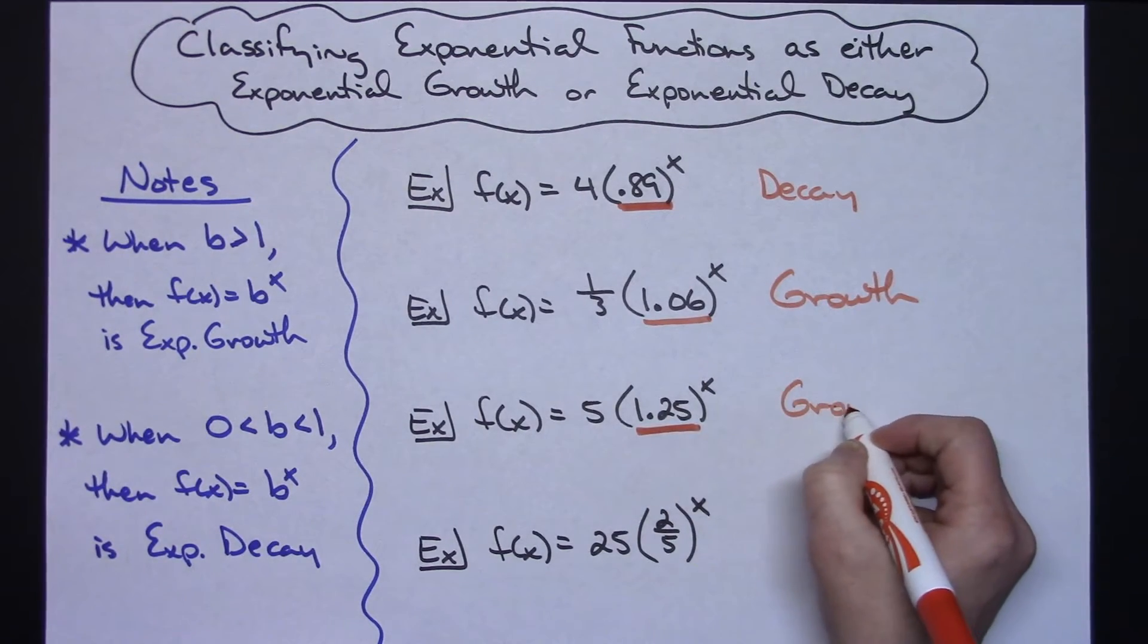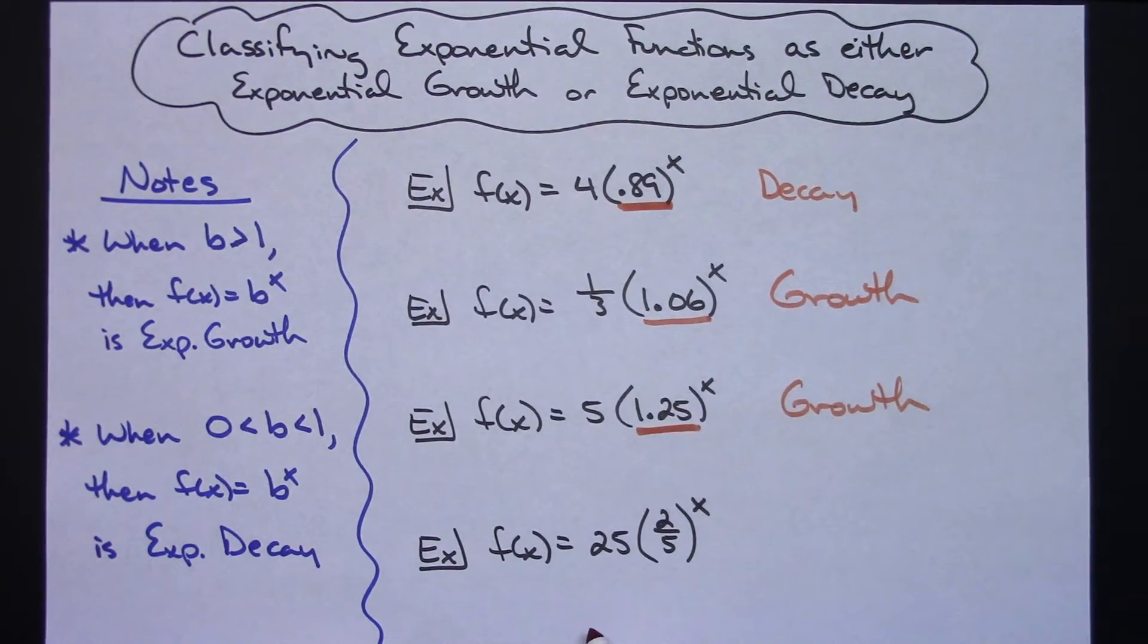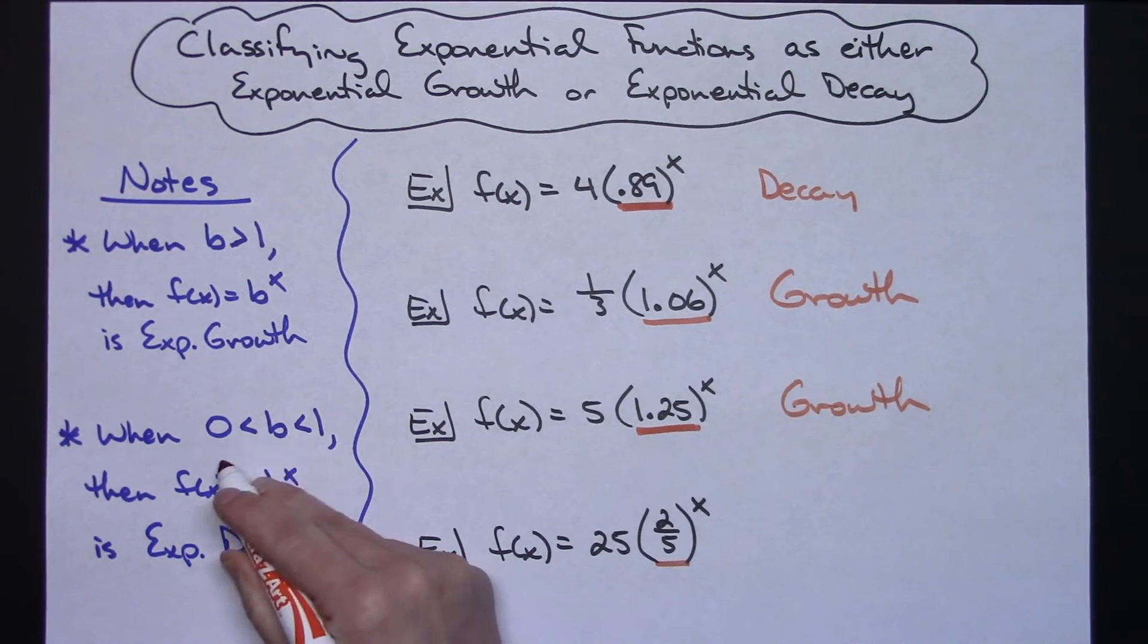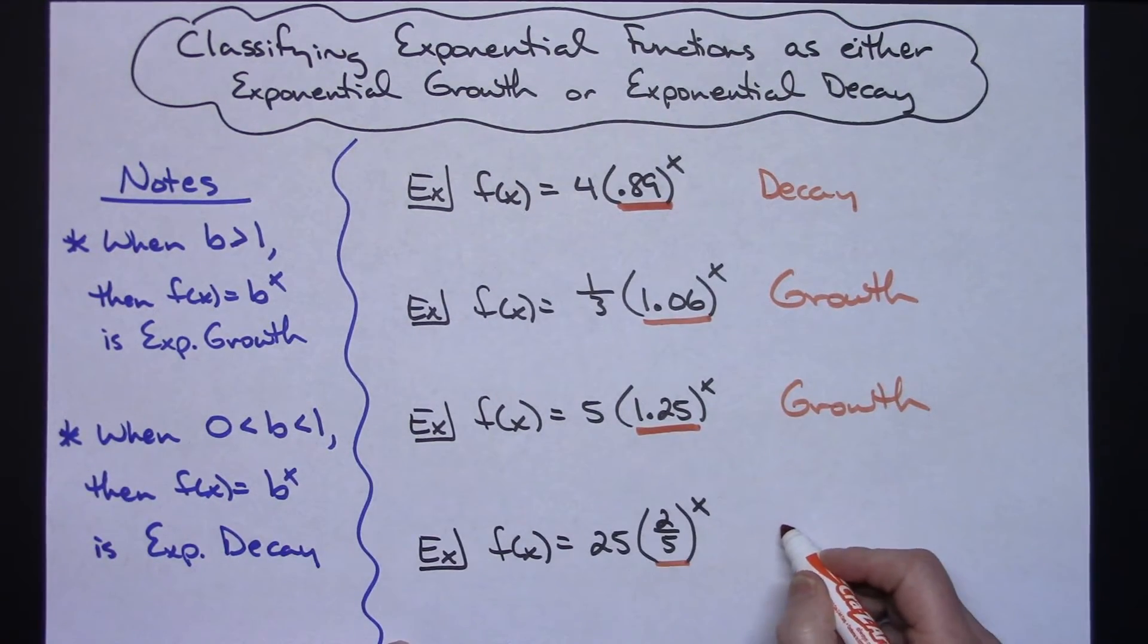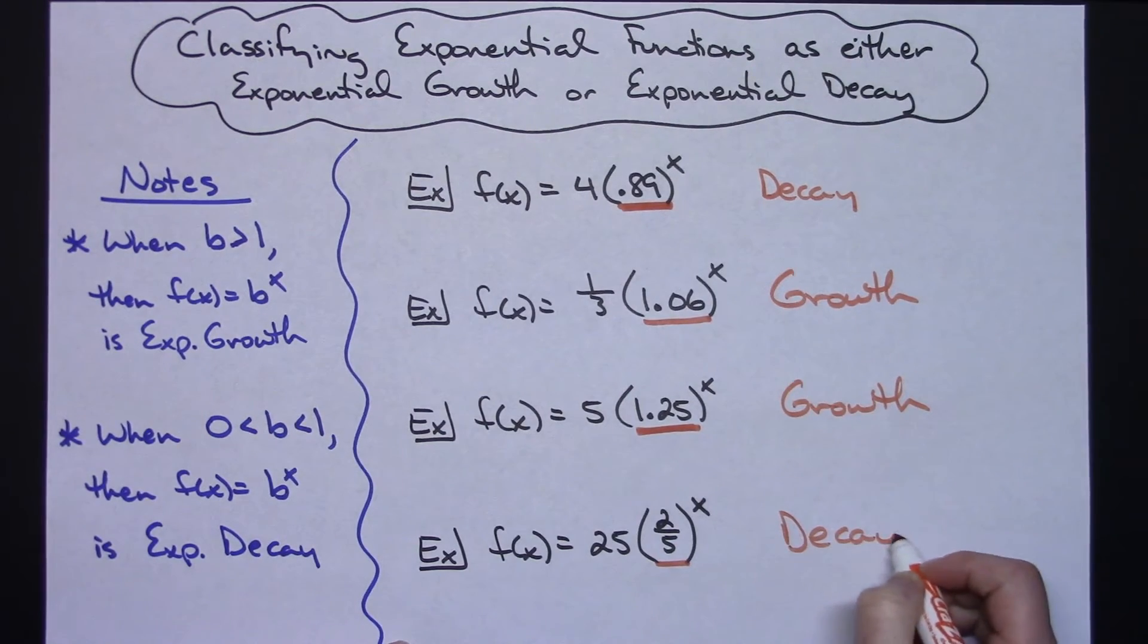And this last example, the 25 has no bearing on it because the base to the x is the fraction two fifths. Two fifths is a fraction in between 0 and 1 so then this last one is a decay problem.